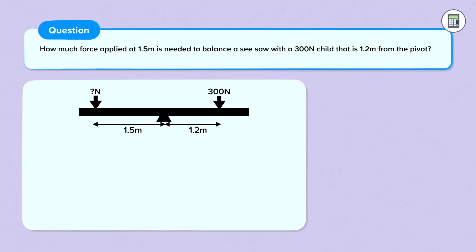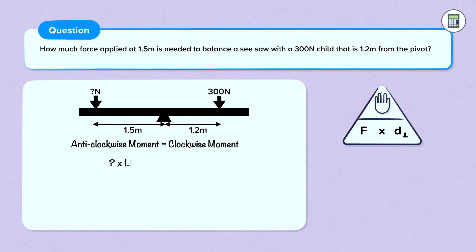Let's look at one final question. How much force applied at 1.5 meters is needed to balance a seesaw with a 300 newton child that is 1.2 meters away from the pivot? So we have a drawing of our situation here.